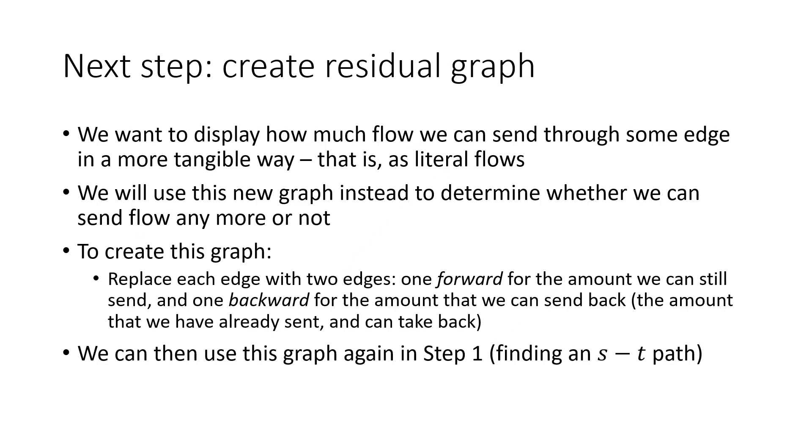Now we need to create the residual graph. This graph is exactly what it sounds like, a graph which displays the amount of residual flow or how much flow we can still send through each edge. The way it works is that we make two edges for each edge we're given, one forward and one backwards, which represent the amount of flow we can send each way. Then we can just use these edges to determine how much capacity we can still send instead of computing the difference between the capacities of the edges in the path and the flows through them as we've been doing in our naive approach.